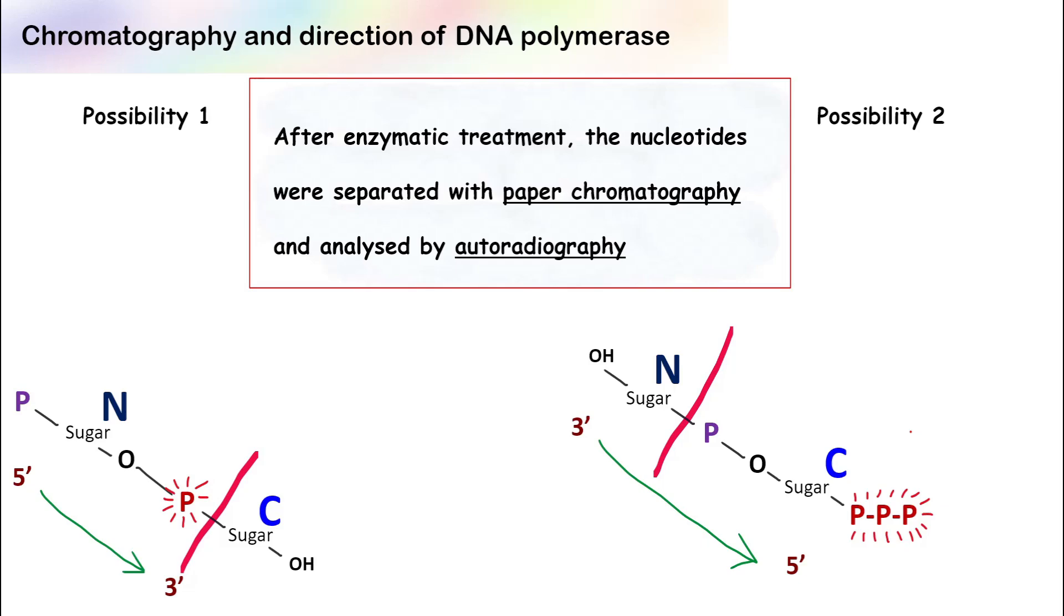The paper chromatography will separate all the nucleotides—A, T, G, C—and autoradiography will tell you which nucleotide has the labeled phosphate. If the phosphate gets transferred to the adjacent nucleotide, then the direction will be from five prime to three prime. And if the labeled phosphate still remains with cytosine, then the direction will be from three prime to five prime.